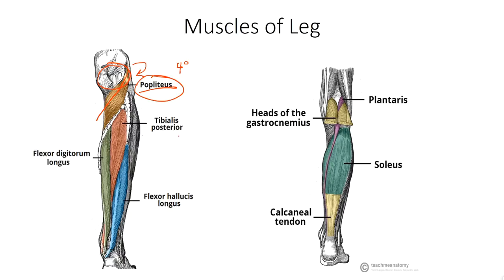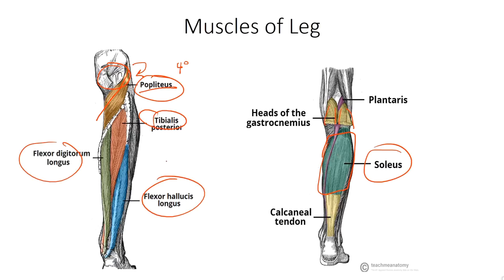Also in the posterior leg are the tibialis posterior, flexor digitorum longus, and flexor hallucis longus — deep muscles. More superficially are the soleus and gastrocnemius (which has two large heads). The large muscle that pops out when you flex your calf is primarily the soleus. The deeper muscles — tibialis posterior, flexor digitorum longus, flexor hallucis longus — are the ones moving your ankle and are important; we'll return to those when we get to the ankle.